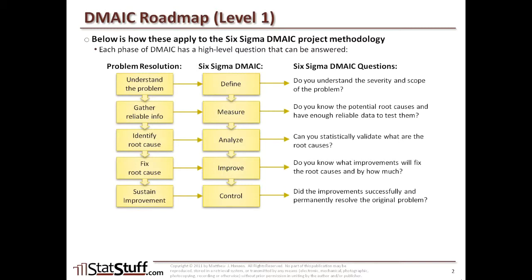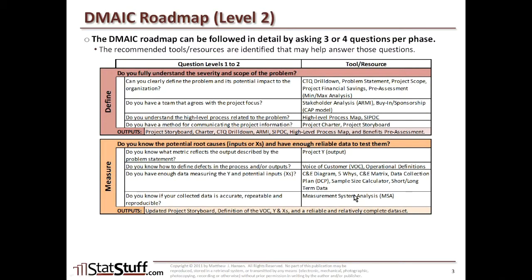We also took that a step further. That's what we call level one — at the top level, we have each of these different questions that we're asking for each of the phases within the DMAIC methodology. We dug last time into taking those questions to another layer, a second layer, going a little deeper, where for each phase we've got the Define phase with the top-level question. If you cannot answer yes to that question, then you ask yourself the second layer of questions, and here's a guide for the different tools or resources that can help you in answering those questions and ultimately the top-level question.